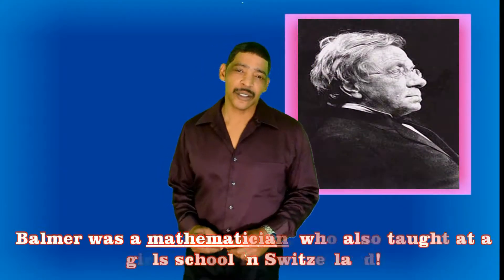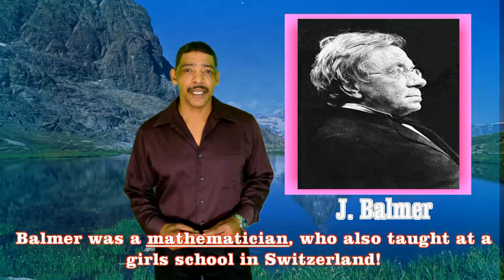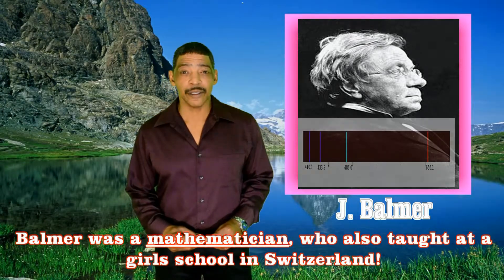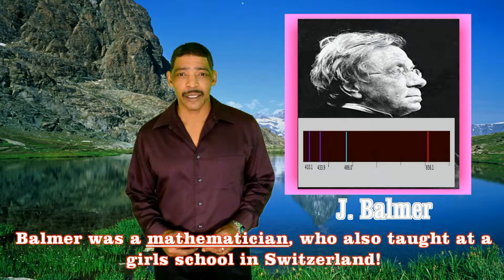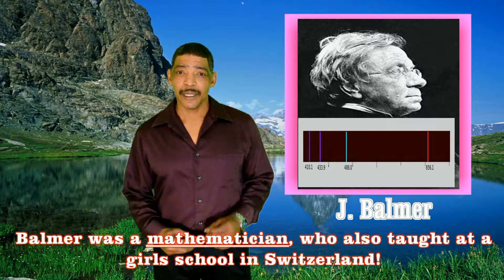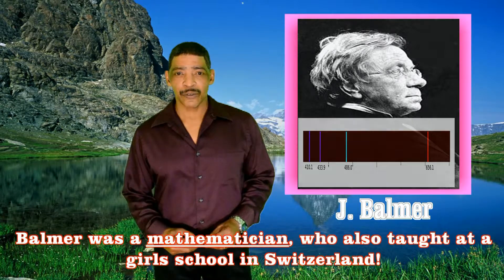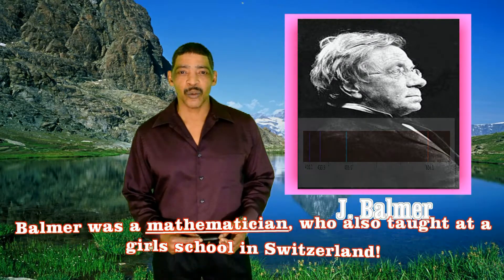You know, in many textbooks, Balmer's referred to as a Swiss school teacher who through trial and error developed a formula that identifies the four wavelengths found in hydrogen's bright line spectrum. But in fact, Balmer's formula laid the groundwork for discoveries made by both Ryberg and Bohr.